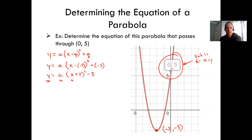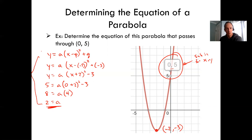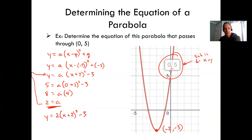The given point allows me to eliminate x and y. I substitute 5 for y and 0 for x. Move 3 to the other side, square 2 to get 4, then divide. I find a equals 2. Once I know a, I put it back in and say y equals 2(x plus 2) squared minus 3. We leave x and y as variables, because that's how you make a graph — x can vary and so can y.